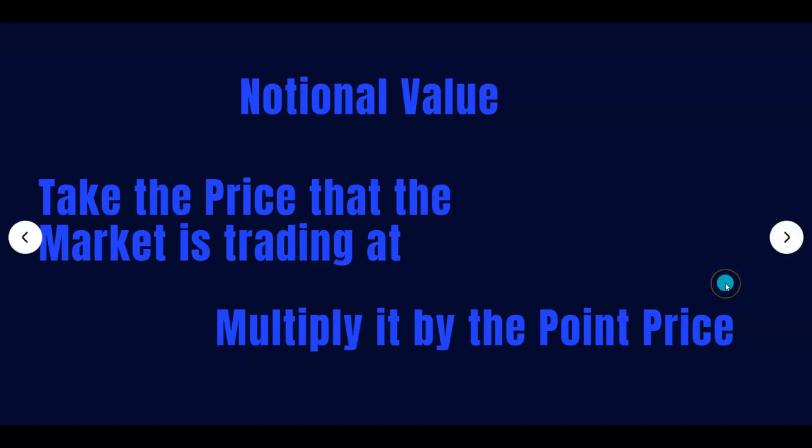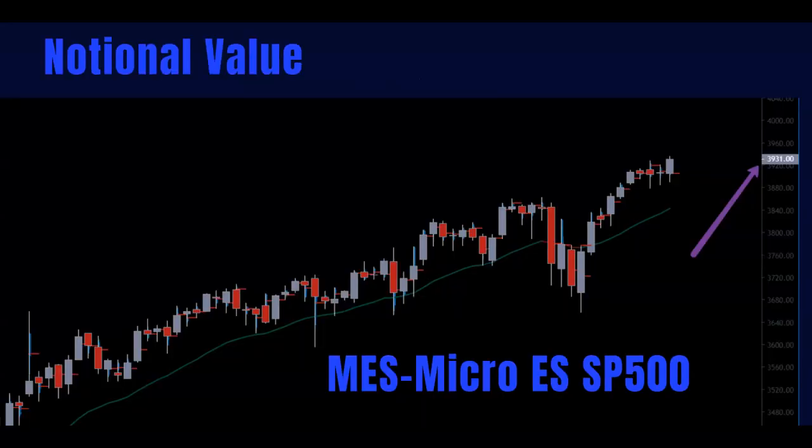We get the price by doing simple math. We take the price that the market is currently trading at, and we just multiply it by the point price. I mentioned in earlier futures-for-rookies videos how to get the point price and what the tick value and point price are. For this example, we will use the Micro E-mini S&P, ticker MES.